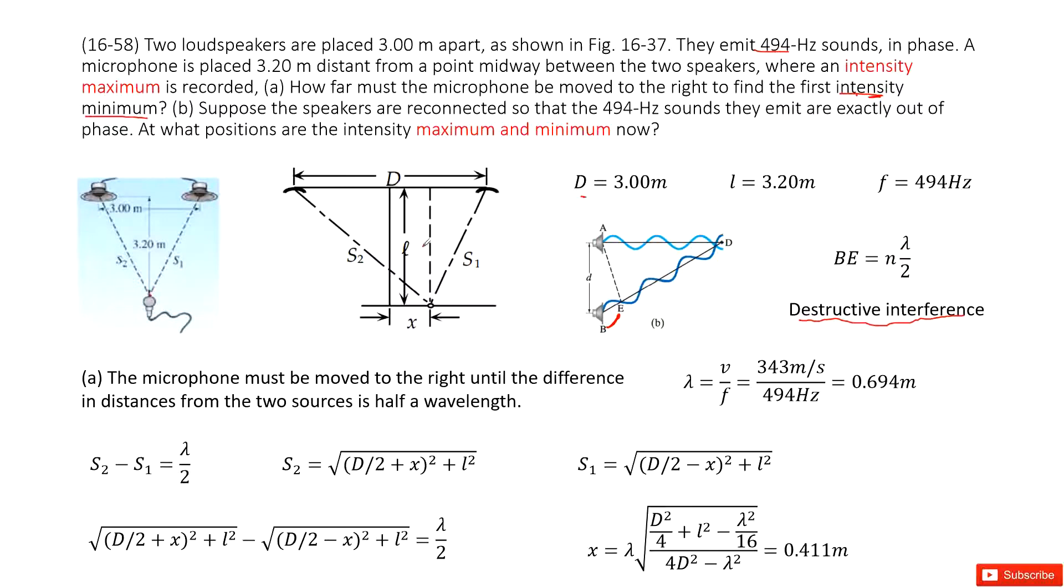Now look at this picture. This is called S1. This is S2. So make sure the difference S2 minus S1 should be n times lambda divided by 2.